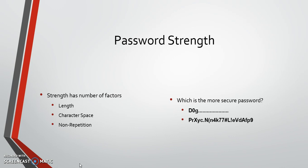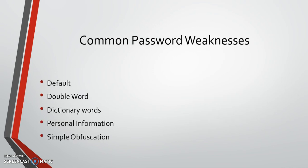We're going to start with this question: which is more secure — this capital D, zero G followed by periods, or this random string of numbers, letters, and symbols? We will actually come back to that once we have a bit more knowledge in a minute.